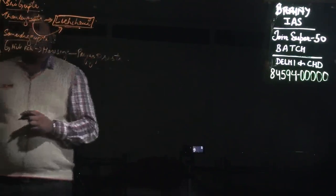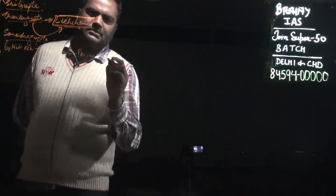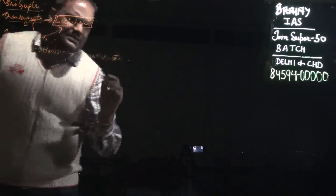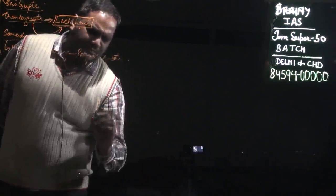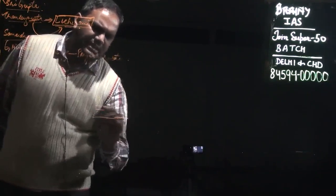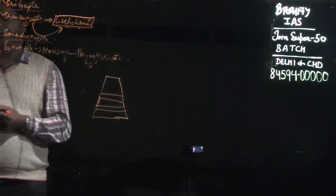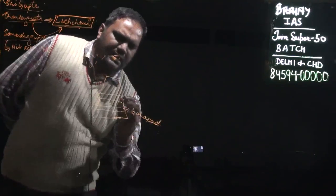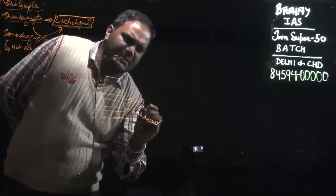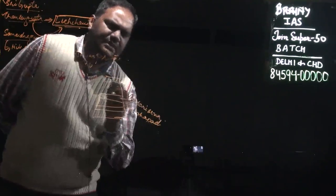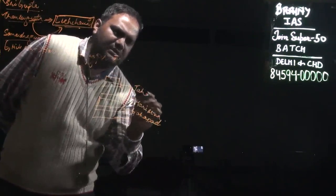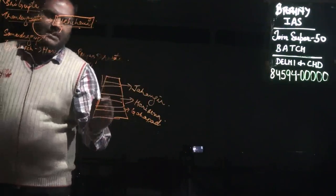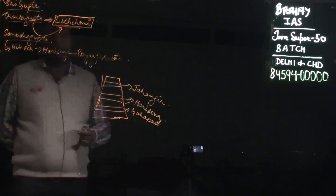The Prayag Prashasti is on the Ashokan Pillar. Just like Ashoka wrote about himself on this pillar, later Samudra Gupta's achievements were inscribed by Harisena, and at the top is mentioned Jahangir. These three individuals are important regarding the Allahabad Pillar.